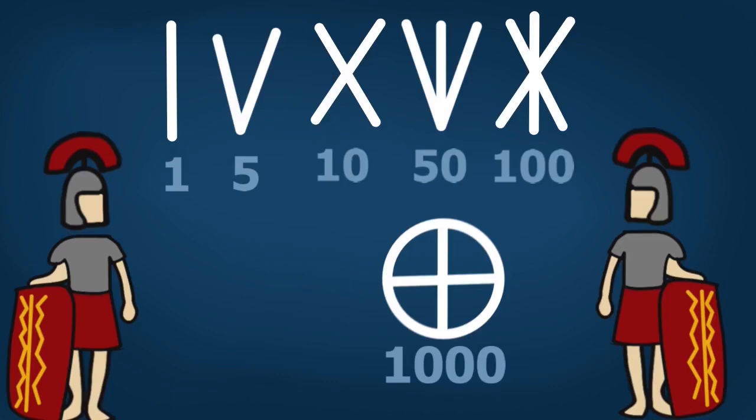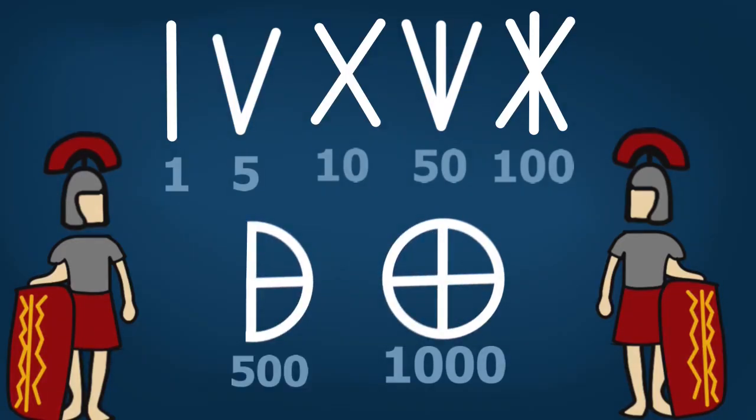As you can see, they had a symbol for five and for fifty, but not for five hundred. So they decided to create one. Since the symbol for one thousand is a circle, the symbol for five hundred must be half a circle — because five hundred is half of one thousand. Makes a lot of sense.